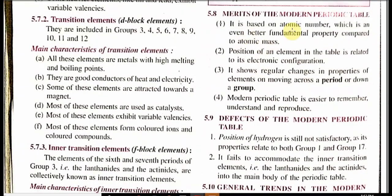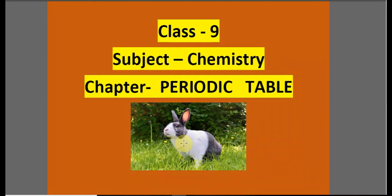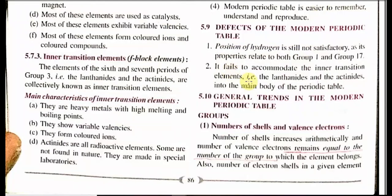Merits of the modern periodic table: first, it is based on atomic number, which is a better fundamental property compared to atomic mass. Second, the position of an element in the table is related to its electronic configuration. Third, it shows regular change in the properties of elements on moving across a period. Fourth, the modern periodic table is easier to remember, understand, and reproduce.